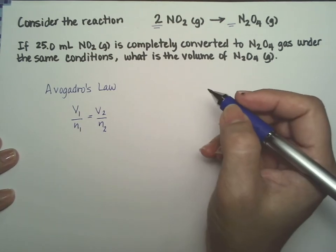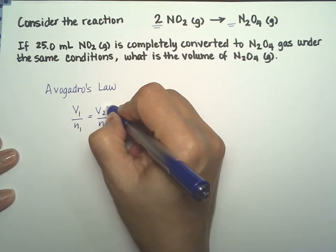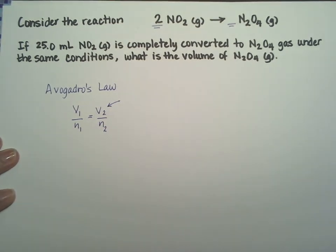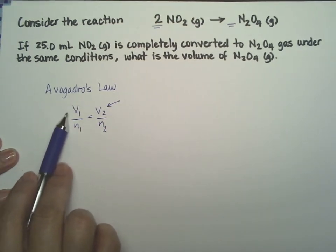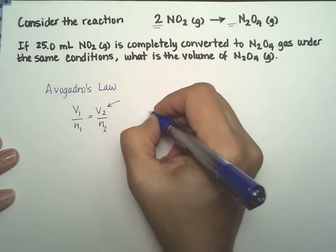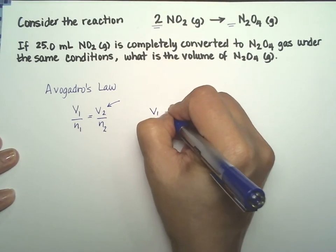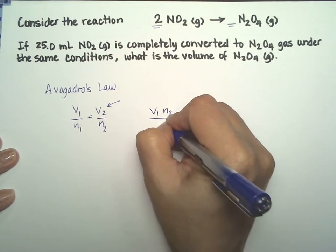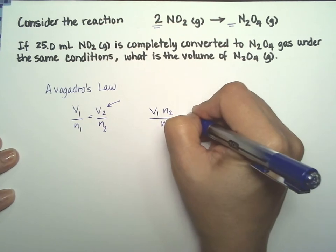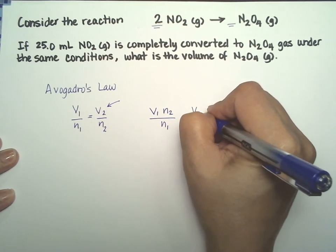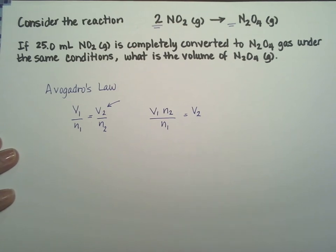All right, so we're going to solve for V2, this is what we want, so we're going to pass the N2 to the other side. So V1 times N2 over N1 gives you the final volume.